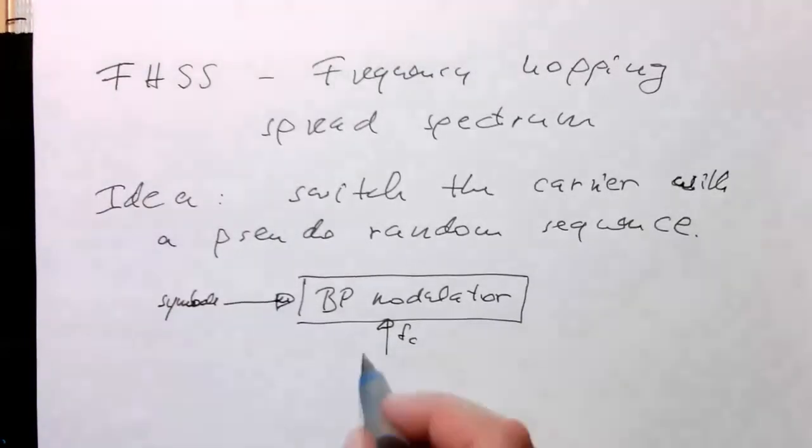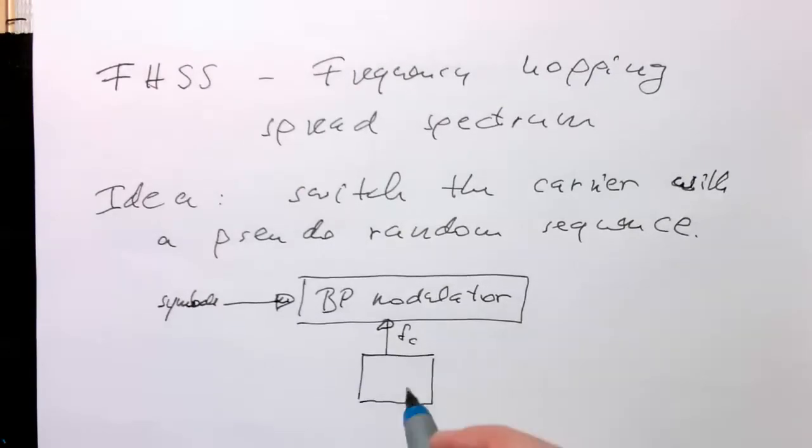And then, so this is our carrier generator here, which is generating this FC. And this is now controlled by a pseudorandom number generator.